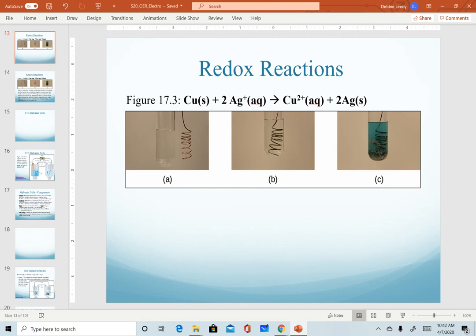Now that we've reviewed identifying what is oxidized and what is reduced in a reaction, we are going to describe how we use that to create what's called a galvanic cell. In other words, a battery.